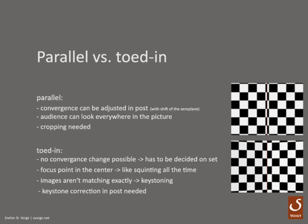So in computer graphics parallel setups are most commonly used. But in live-action movies you may have to use a toed-in setup because the cameras are so big that you can't get them close enough together, especially when you want to film something that's really small. But more about live-action in session number 4.